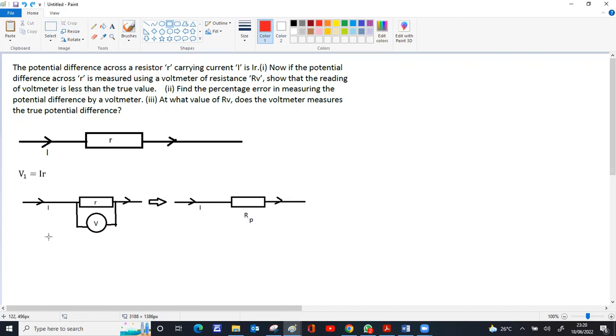This potential difference can be measured as i times rp. The parallel resistance rp is r times rv divided by r plus rv. So we have v2 and v1.